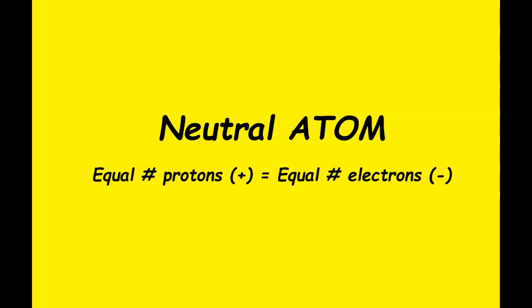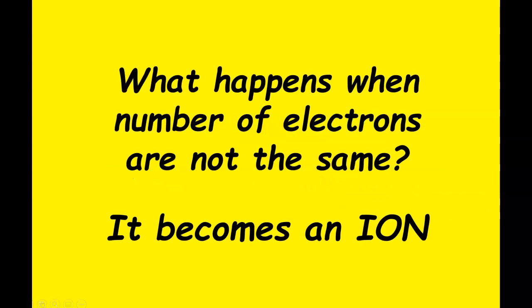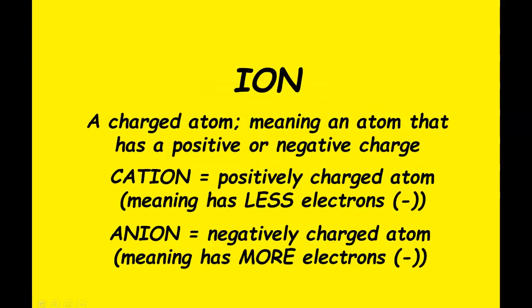A neutral atom is an atom that has no charge because the number of protons equals the number of electrons. When an atom does not have the same number of electrons as protons, it becomes an ion — a charged atom with either a positive or negative charge.